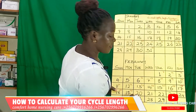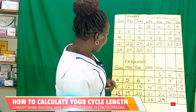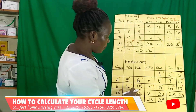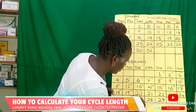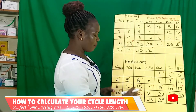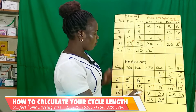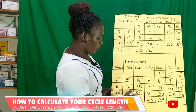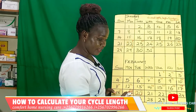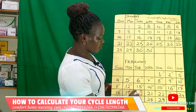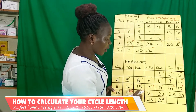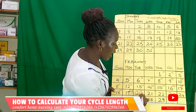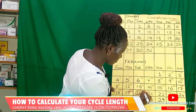Let's assume that in the following month she saw her period blood on the 20th. Meaning her cycle length is 29 days, considering that she saw her period blood again on the 20th of February. The 20th is her first day of the next cycle.